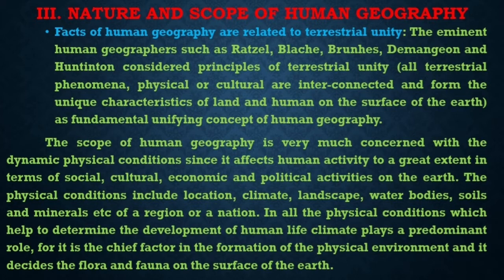Sixth, the scope of human geography is very much concerned with the dynamic physical conditions, since it influences human activity to a greater extent in terms of social, cultural, economic, and political activities on the surface of the earth. Seventh, the physical conditions include location, climate, landscape, water bodies, soils, and minerals of a region or a nation. Eighth, among all the physical conditions which help to determine the development of human life, climate plays a predominant role, for it is the chief factor in the formation of the physical environment and it decides the flora and fauna on the surface of the earth.